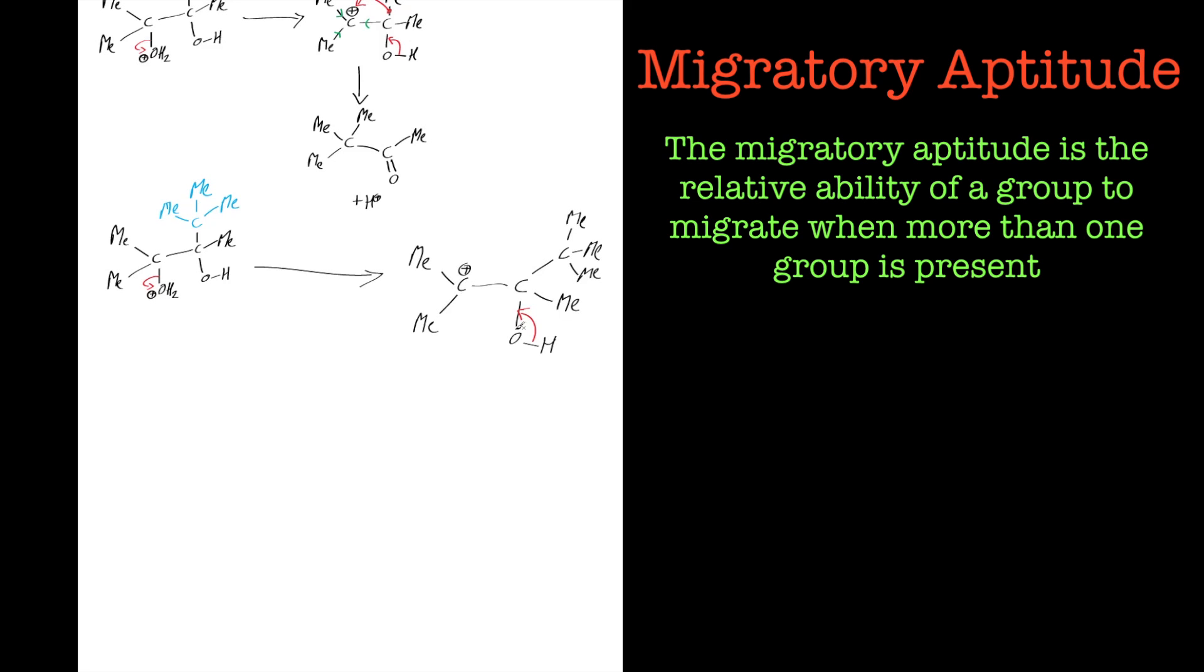Okay, so we've got to decide now which group will migrate. It's usually the one that's got the most electron density in the carbon-carbon bond there. So if we look at the tertiary butyl group, that's got methyl groups pushing electron density into the carbon, so that carbon-carbon bond should be pretty electron-rich.